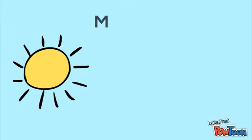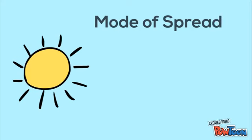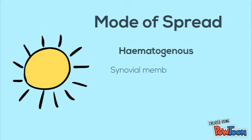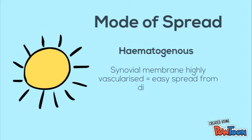There are various methods of spread, the most common being hematogenous, or via the blood. The synovial membrane is highly vascularized and bacteria can thus enter the synovial joint quite easily through the bloodstream.